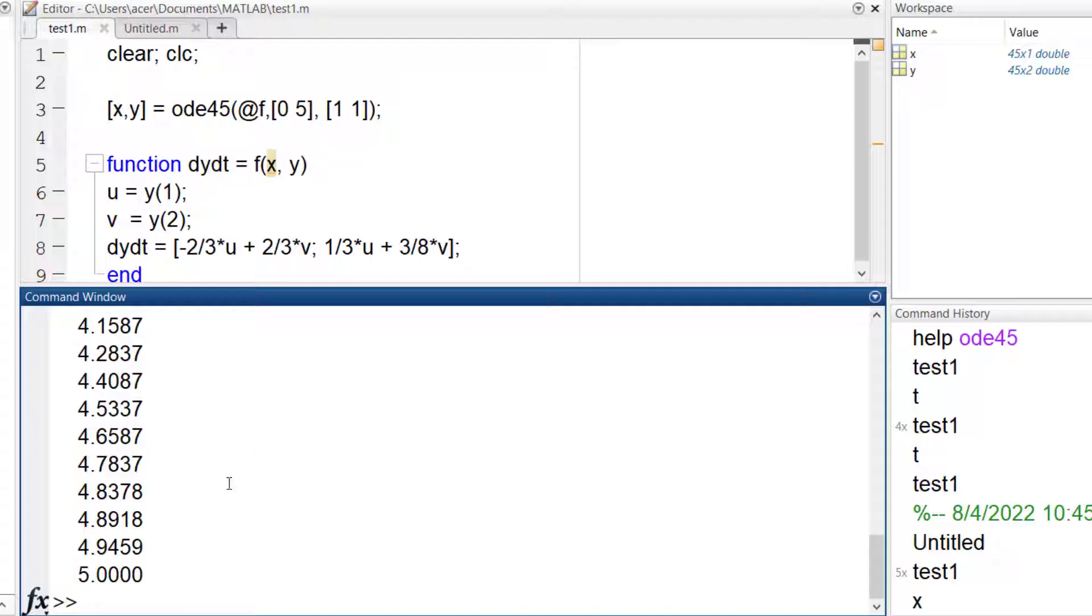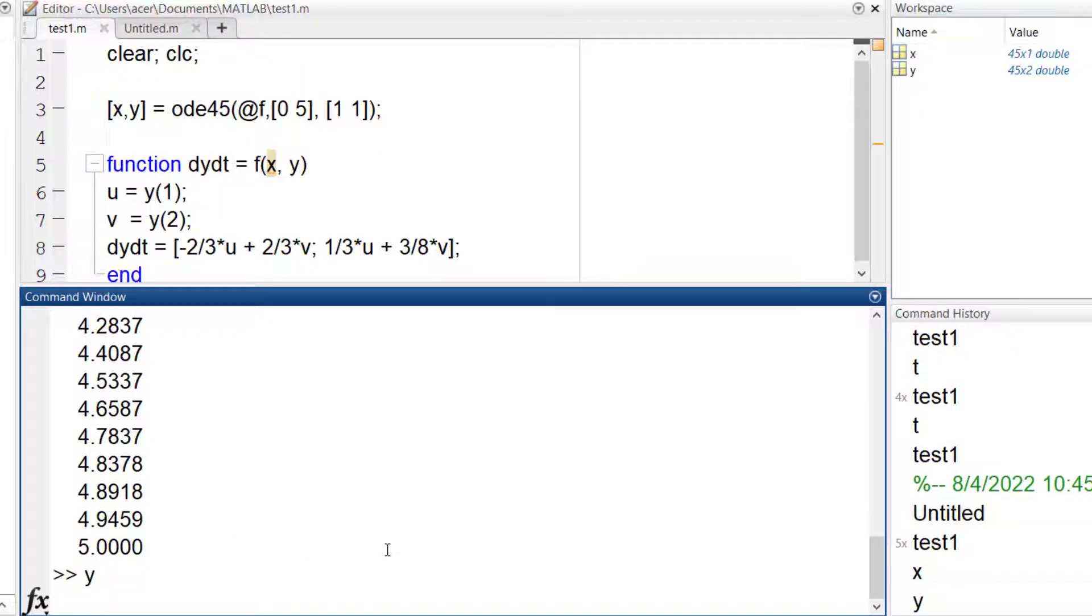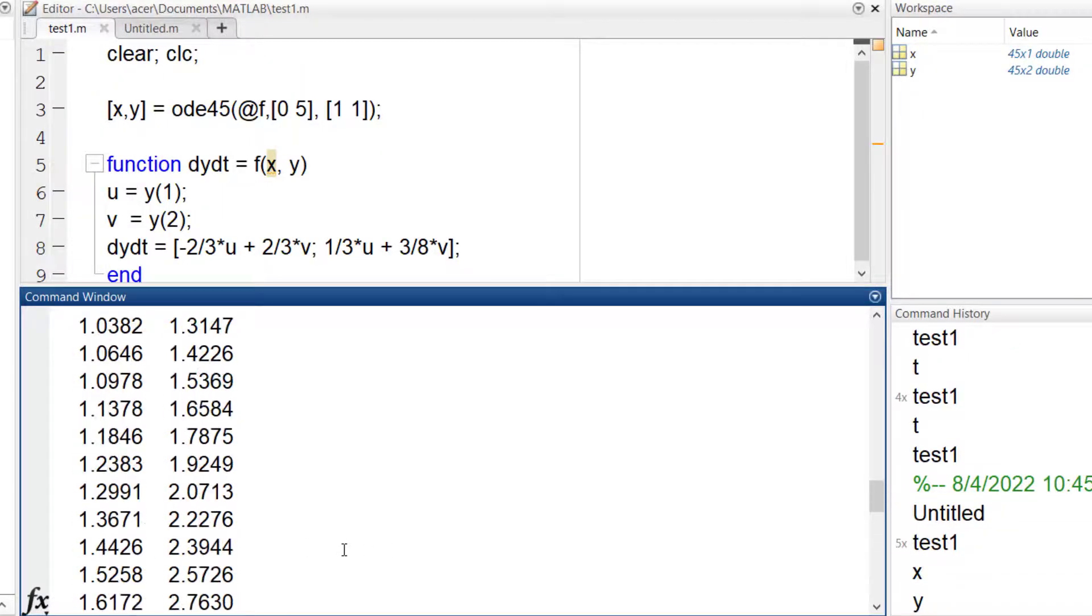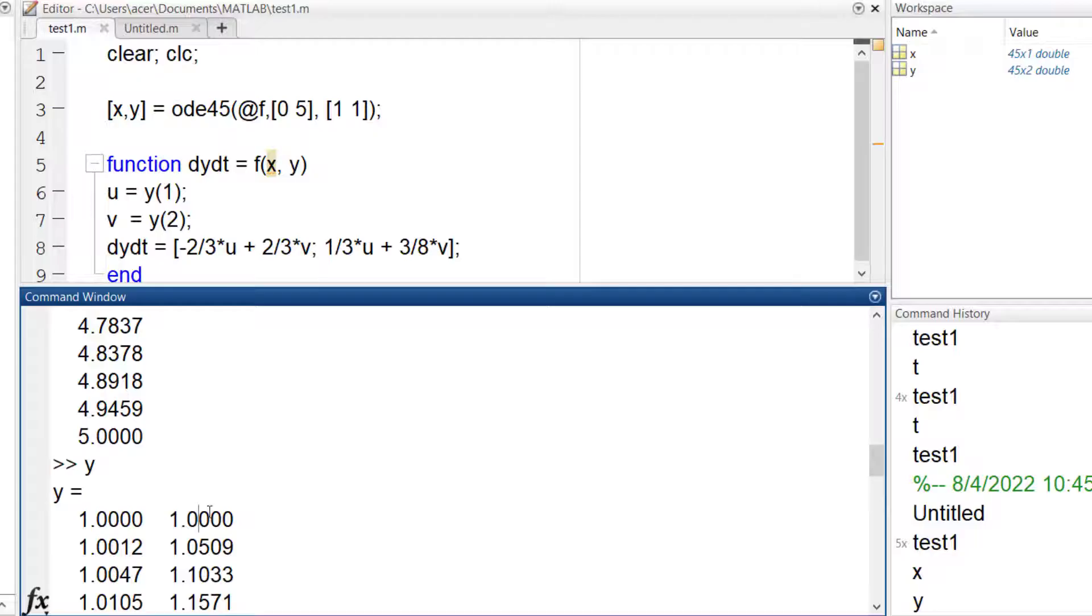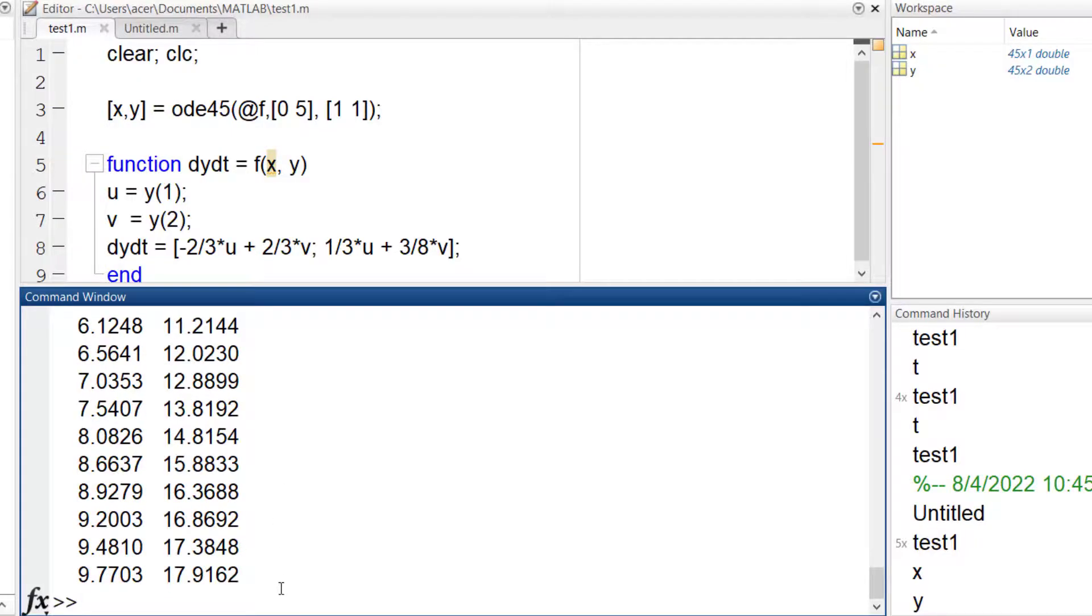Now I run the code. Let me take a look at x and y. x goes from 0 to 5 as expected. And y is a matrix with two columns, u and v. I can plot u and v versus x. Also give them a legend.